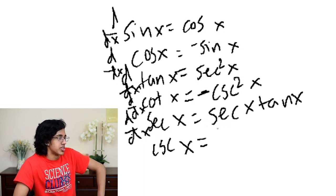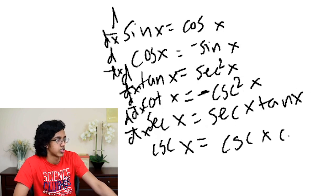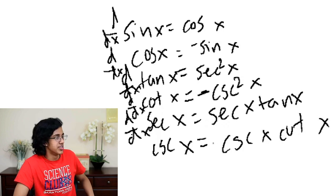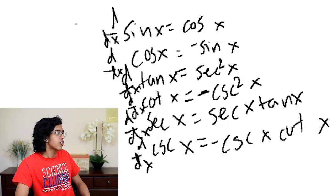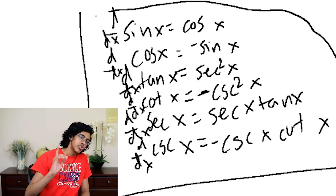And then for cosecant x, it's the same idea. You take this guy, you add c's in front of all of them, cosecant x, cotangent x, and then, because it starts with a c, you know what to do. Negative, let's go. Alright, there are your trig derivatives. Very cool.